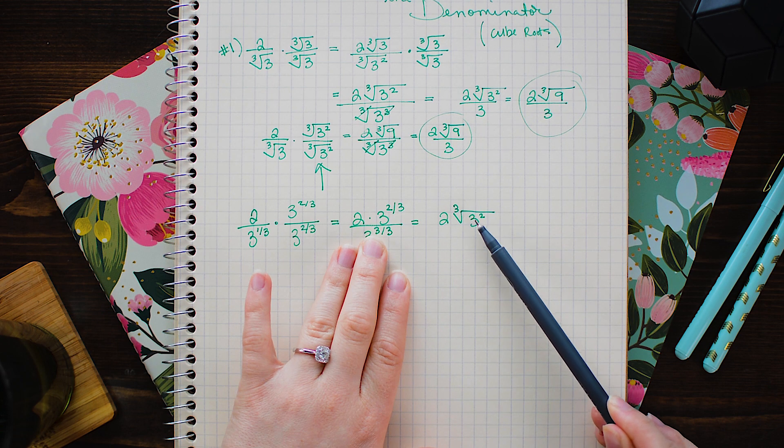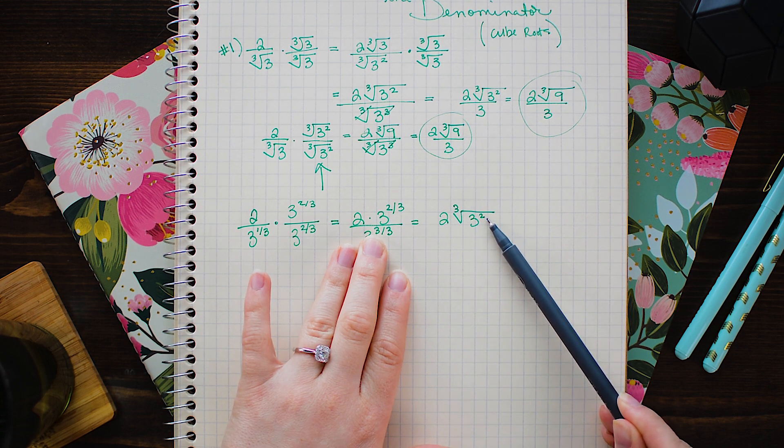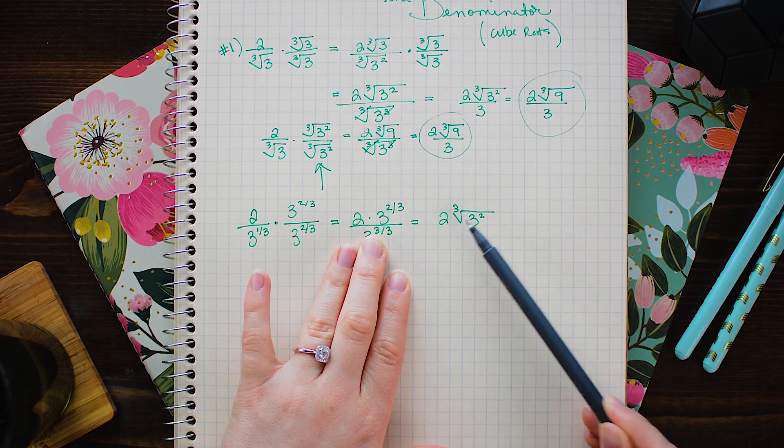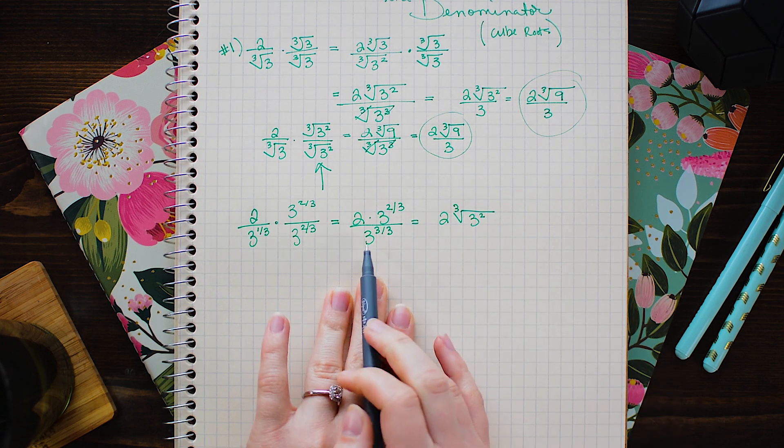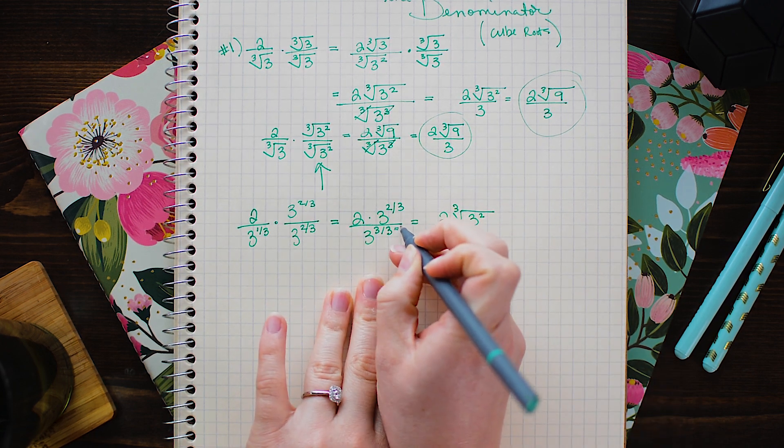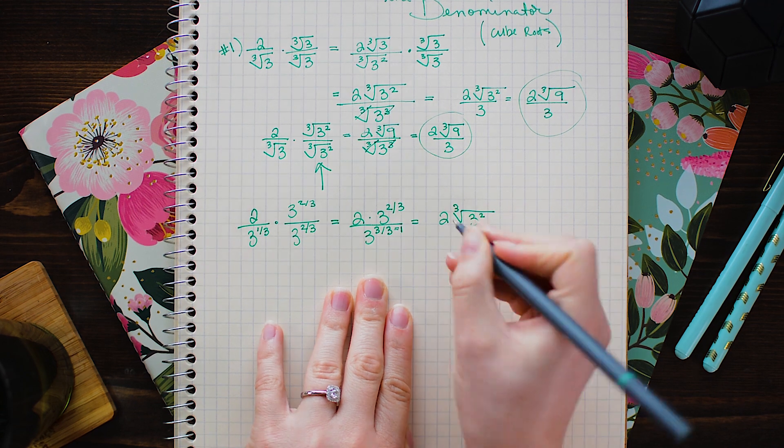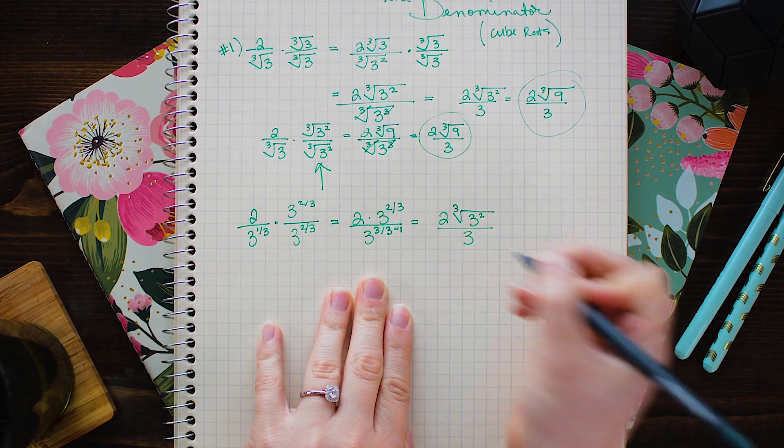Whatever number is in the numerator just remains the power. So 3 to the 2 thirds power is the same as 3 squared under a cube root. And in the denominator 3 divided by 3 equals 1. So that is just 3.